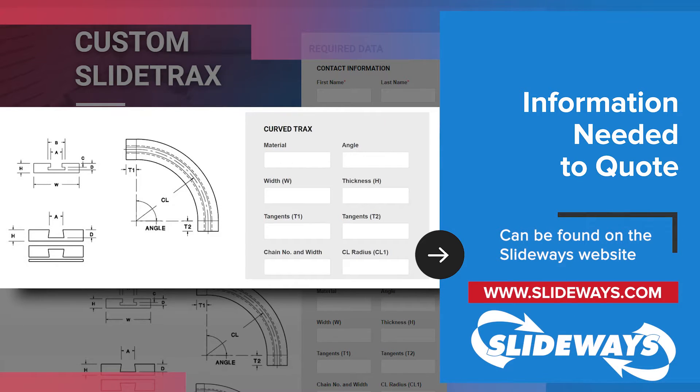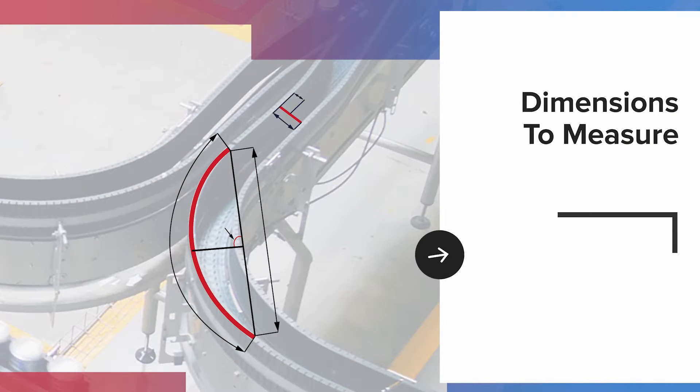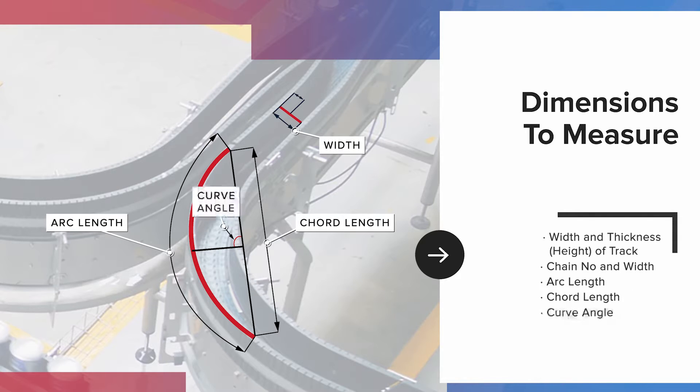Here is what we'll be measuring: width and thickness or height of the track, the chain number and width, the arc length, the cord length, the curve angle, the rise, and the tangents.